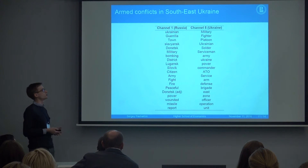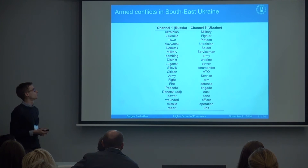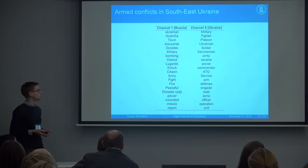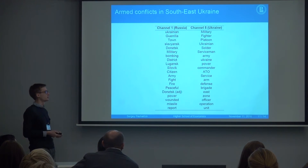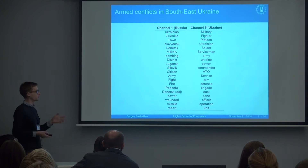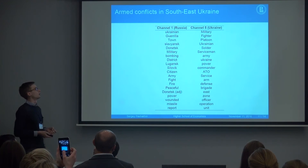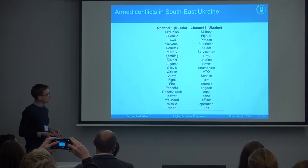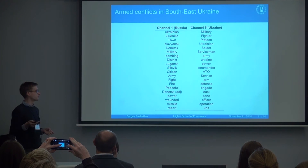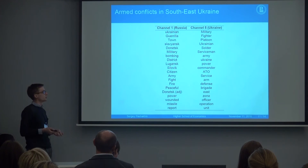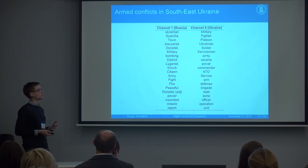You can see that Channel 1 talks about armed conflict in southeast Ukraine as a war — words like 'bombing,' 'military,' 'firefight,' 'army,' 'wounded' suggest a war story. Channel 5 presents it not as obviously, but you can infer from the words that it's a story of crime-fighting or anti-terrorist operations — words such as 'anti-terrorist operation,' 'defense zone,' 'operation,' 'power,' 'army,' 'servicemen.'